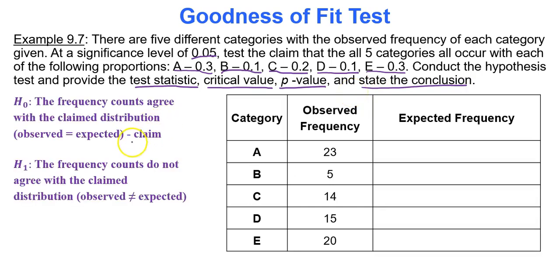First, the hypotheses. The null hypothesis is that the frequency counts agree with the claimed distribution — our observed frequencies equal our expected frequencies. We're testing whether the expected frequencies, as broken down by the proportions 0.3, 0.1, 0.2, 0.1, and 0.3, agree with what we observed. The alternative is that the frequency counts do not agree with the claimed distribution — observed frequencies do not equal the expected.